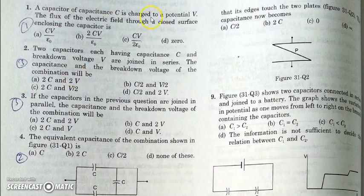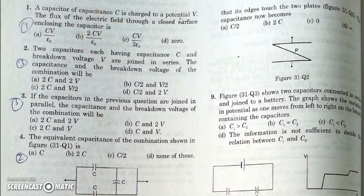The first question asks us to find the flux through a closed surface enclosing a capacitor. As the net charge enclosed by a capacitor is +Q and -Q, which sums to zero, the net flux through the capacitor will be zero no matter what capacitance or voltage it has, because it has equal and opposite charges on both plates. The answer is D.